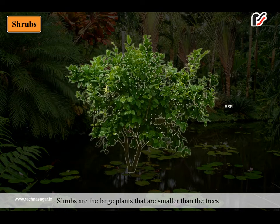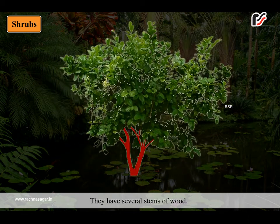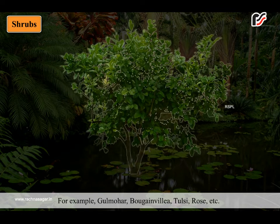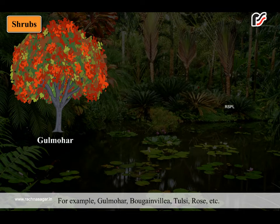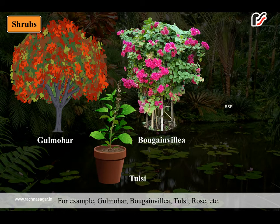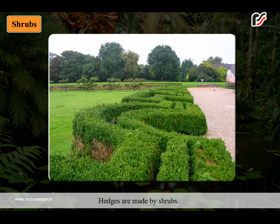Shrubs are large plants that are smaller than trees. They have several stems of wood. Their branches are born on hard stems. They also live for many years. For example, gulmohar, bougainvillea, tulsi, rose, etc. Hedges are made by shrubs.